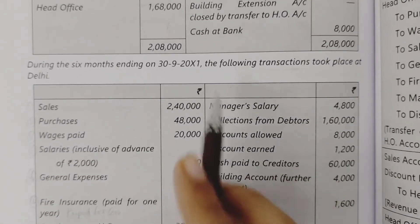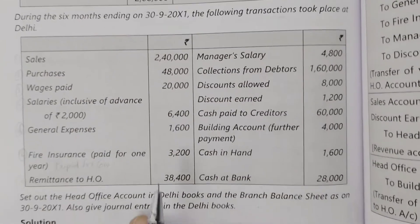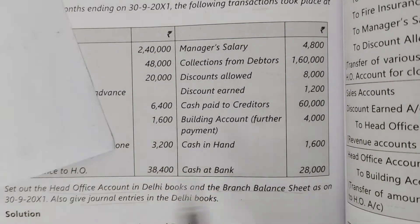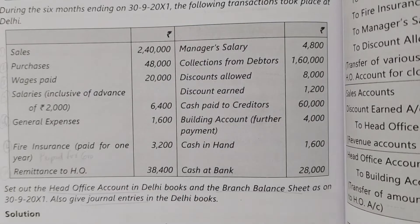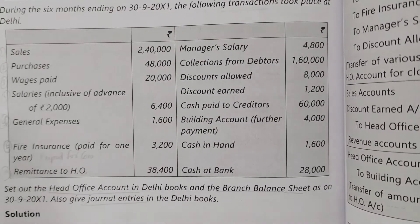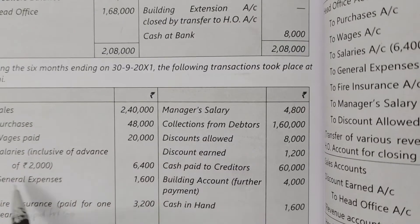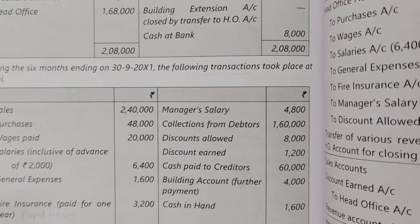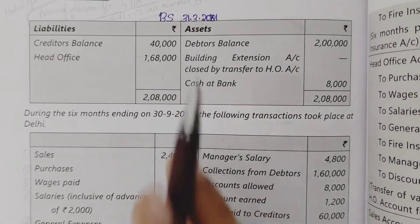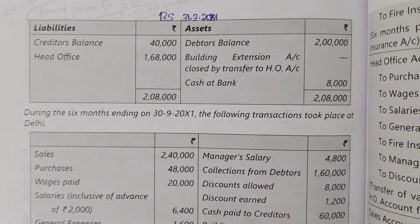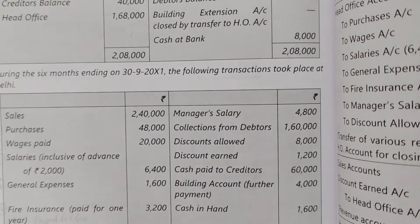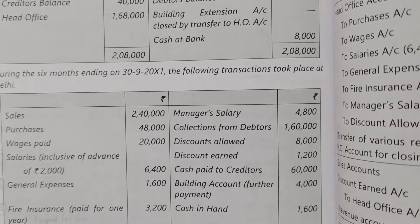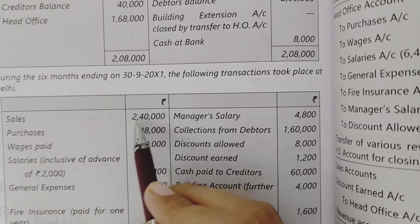During the 6 months ending 30th September, the following transactions took place in Delhi: sales, purchases, wages, and salaries. We are required to set out the head office account, branch balance sheet, and journal entries. The nominal accounts — sales, purchases, salaries — and fixed assets are transferred to the head office account. Current assets and current liabilities amounts are also transferred.